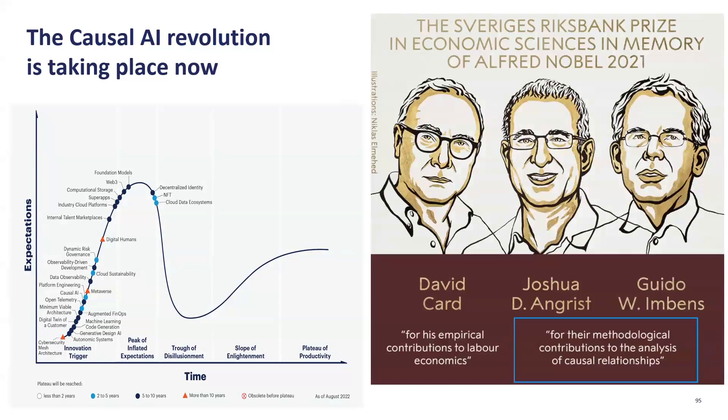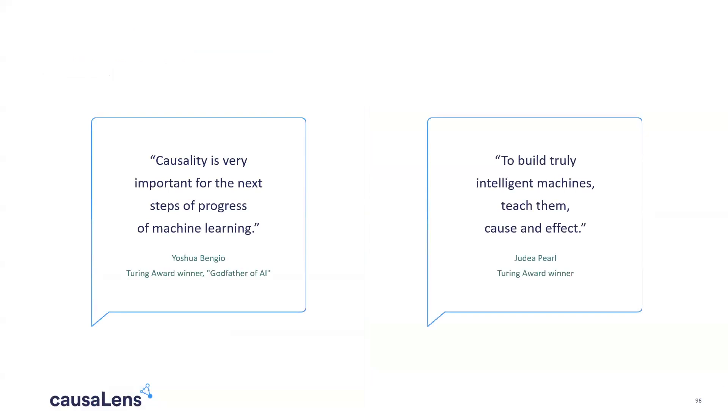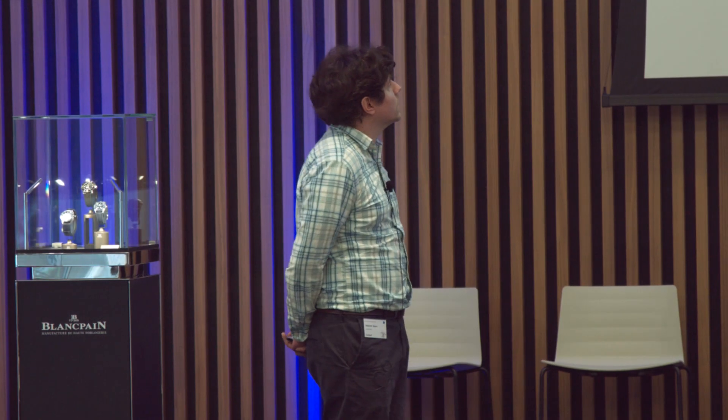The causal AI revolution is taking place now — it's one of the hyped technologies in the Gartner cycle. A Nobel Prize was awarded in 2021 for discoveries in causal analysis, and godfathers of AI appreciate the need for causality in building the future of machine learning. In the words of Judea Pearl, a Turing Award winner: to build truly intelligent machines, you need to teach them cause and effect. You can learn more about causality on our website. Thank you.